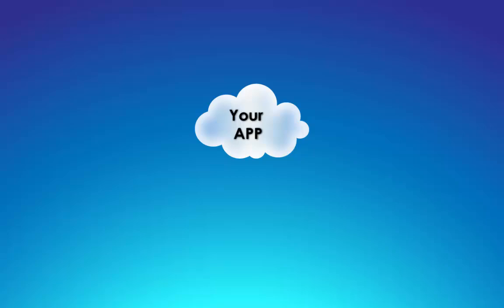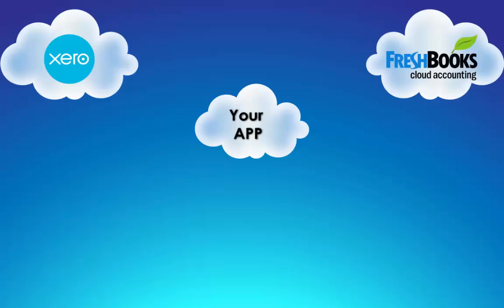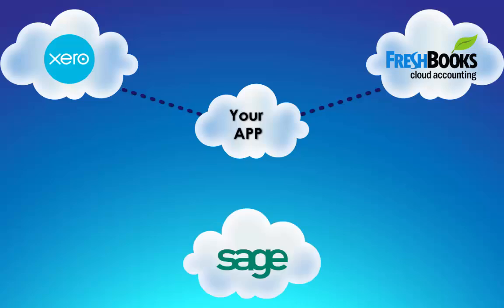The new Suntico API web services are for developers that have cloud or mobile business apps that connect to accounting software and would like to address the hundreds of thousands of companies that use Sage50. While your app may be designed for the cloud or mobile, more than 90% of existing business accounting software, including Sage50, is deployed on clients' premises. So if your app only connects to cloud accounting software, you're missing more than 90% of your potential market.